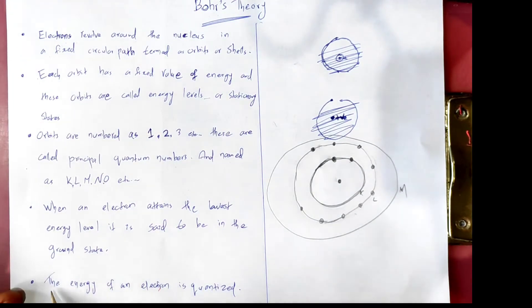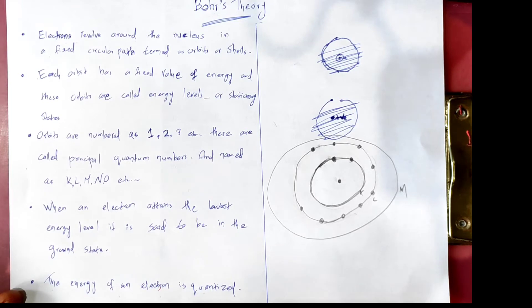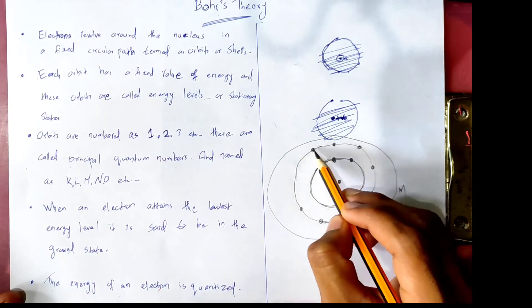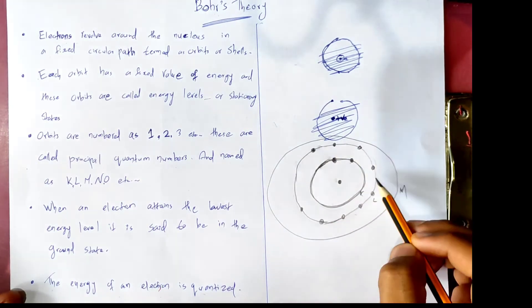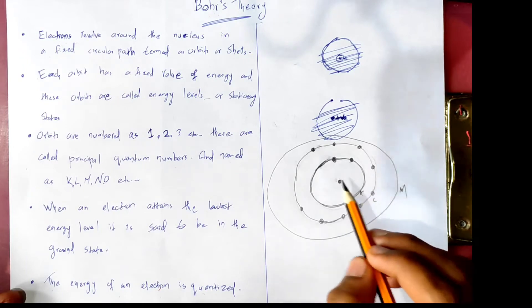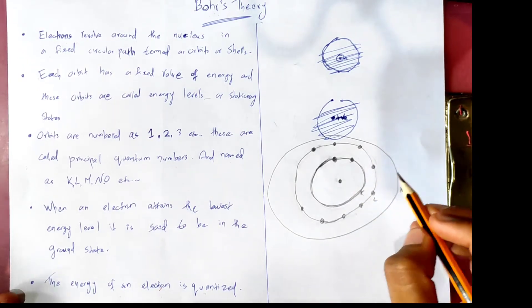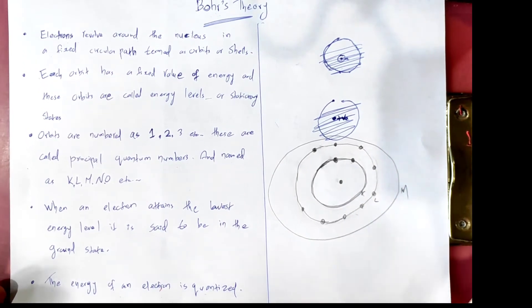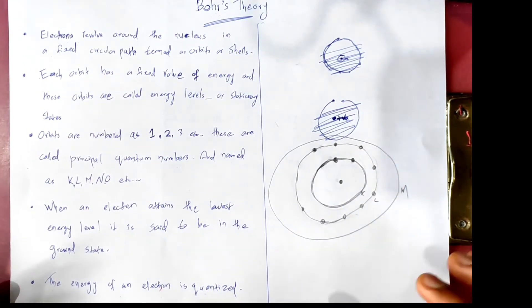The energy of an electron is quantized — it is fixed.